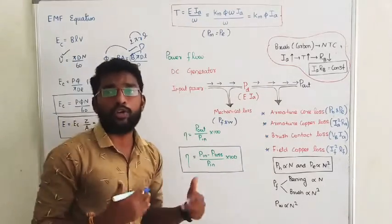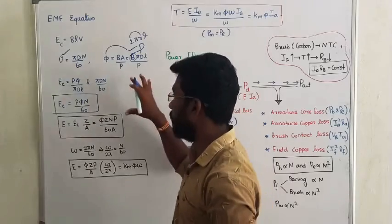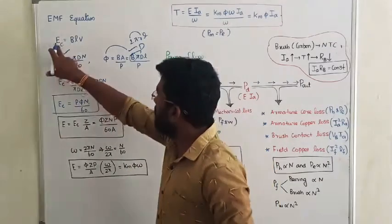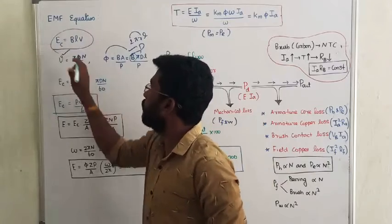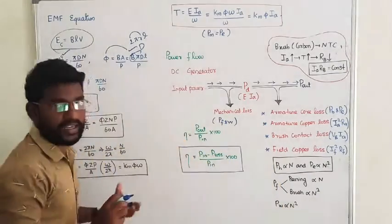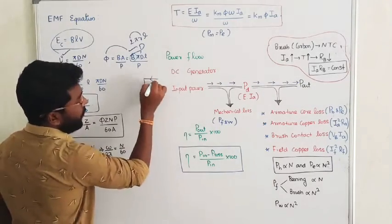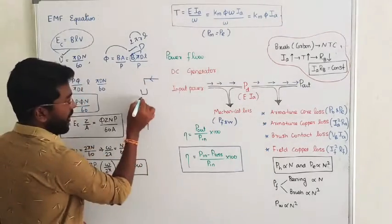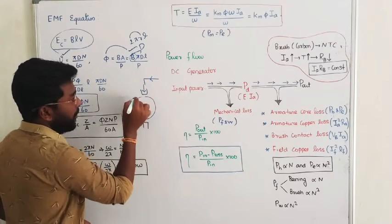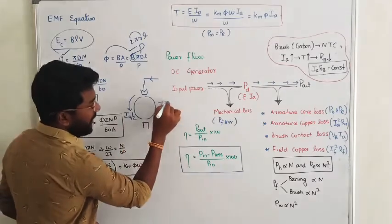Now I would like to know the total number of conductors Z. The EMF per conductor formula applies to one conductor. Looking at the armature design, if we take the parallel paths — for the inner closed ring, the current divides through different paths. Current through one path is Ia divided by 2.